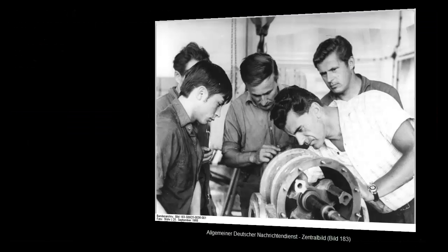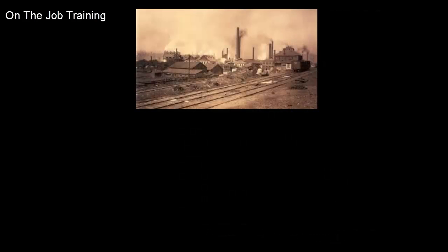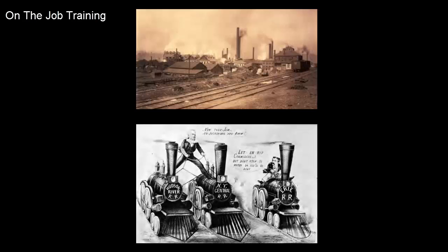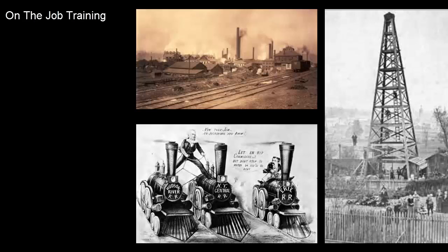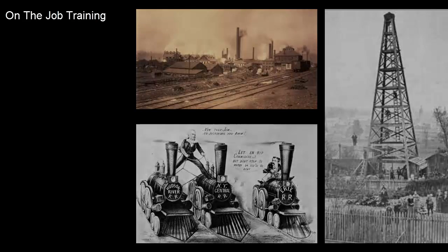For hundreds of years, the master craftsman taught his apprentice specialized skills. On-the-job training was the foundation of the Industrial Revolution. In the USA, from the 1850s on, we saw steel, railroad, and oil businesses thrive, growing faster than the new master craftsman could train an apprentice. Master craftsmen saved time, but training an apprentice is a slow process.